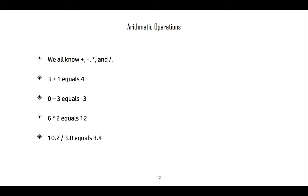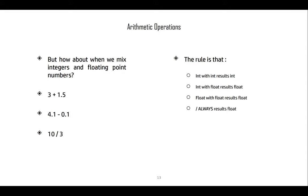Let's explore the basic ones: 3 + 1 = 4, 0 - 3 = -3, 6 × 2 = 12, 10.2 ÷ 3.0 = 3.4. These are not very mysterious operations.